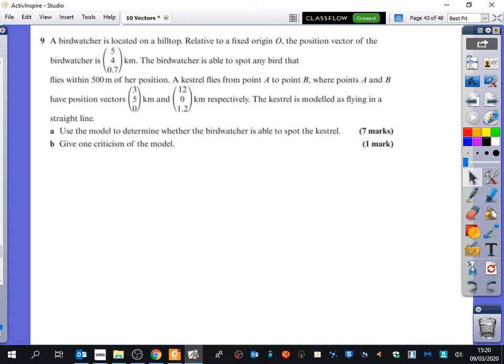So we're going to have a quick look at this one from the homework about a bird catcher. Everything is relative to a fixed origin and we've got here where the bird watcher is. So that's a particular point. I'm going to call them W for watcher. The bird watcher is able to spot any bird that flies within 500 metres. Well notice this is in kilometres so I would probably be thinking that as 0.5 kilometres now for the rest of the question.